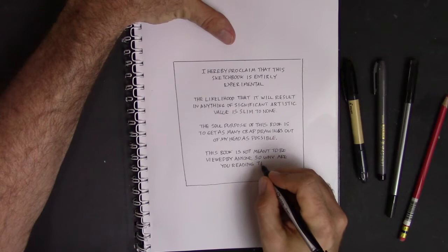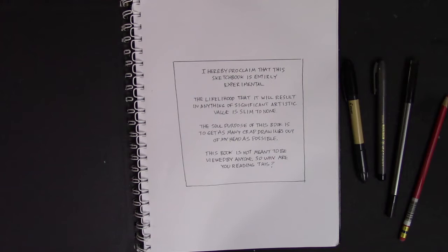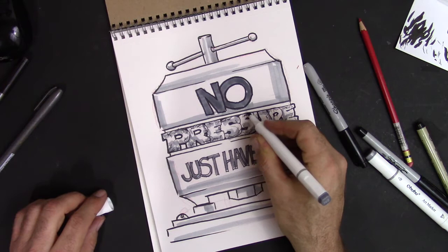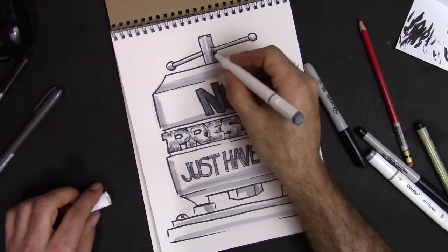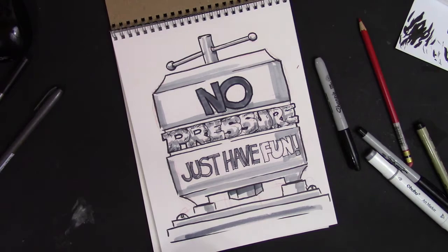Tip number four, write yourself a note. So this is just to remind yourself that this isn't meant to be taken so seriously. My note, I just put, I hereby proclaim that this sketchbook is entirely experimental. The likelihood that it will result in anything of significant artistic value is slim to none. The sole purpose of this book is to get out as many crap drawings as possible. This book is not meant to be viewed by anyone. So why are you reading this? Now, maybe you're a little more of the glass half full type of person and you want to put a positive spin on it. So just write a little affirmation, some words of encouragement. So with this one, I just put no pressure. Hey, you know, just have fun. And every time you open your book, they'll remind you of that so that you'll be in a positive state of mind and you'll get to doing what's important. And that is just getting your ideas in there in that sketchbook.